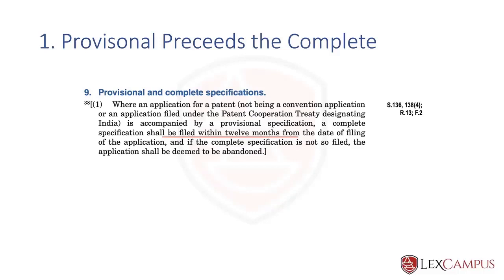This sets the relationship between a provisional and a complete. The provisional, by its very meaning, is something of a temporary or transient nature — it is a stop-gap measure. It is done to preserve the priority and must be followed up by a complete. If it is not followed up by a complete, the priority is lost and the application itself is lost.